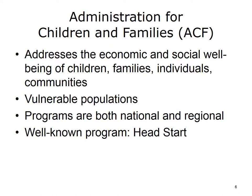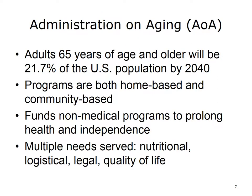Next is the Administration on Aging, or AOA. According to government census projections, people aged 65 and older will represent 21.7% of the population by the year 2040. Individuals who are currently aged 65 can expect to live, on average, about another 18 years. Many older people live alone and have a low income, creating an increased need for national programs that target this group. The AOA provides funding for non-medical, home-based, and community-based services for the elderly, with the goal of prolonging the health and independence of senior citizens. Examples include home delivery of meals, nutrition information, transportation services, adult daycare, and legal assistance.